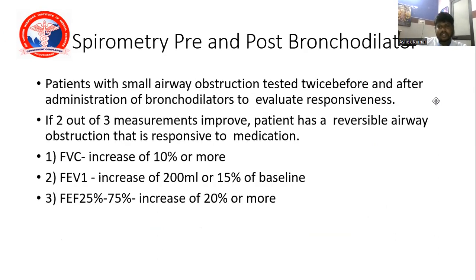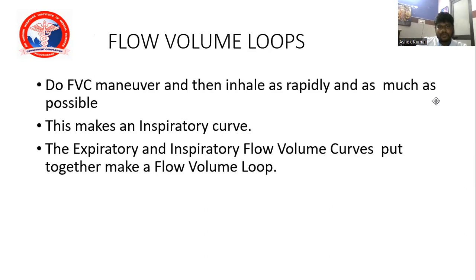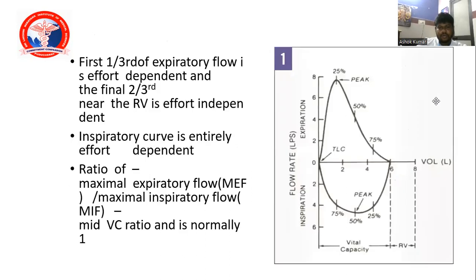Spirometry pre- and post-bronchodilator test: Patients with small airway obstruction are tested twice — before and after inhaled bronchodilator — to evaluate reversibility. Positive response (reversible airway obstruction): FEV1 increase of 12% or more and 200 ml or more from baseline, or FEF 25–75% increase of 20% or more. The inspiratory and expiratory flow-volume curves put together form the flow-volume loop.